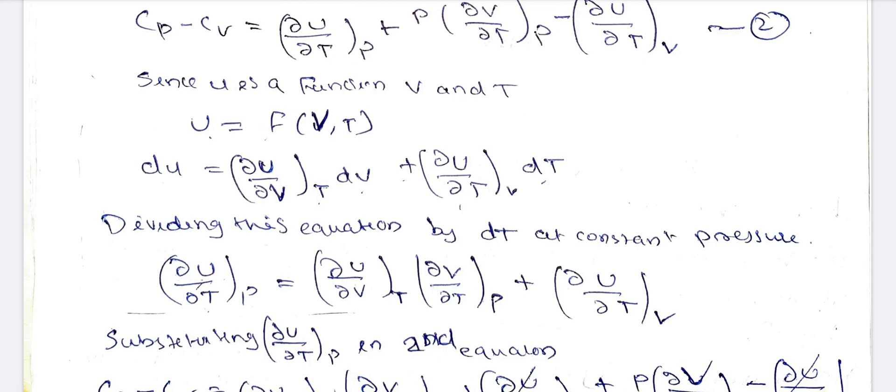We can write dU as: dU equals (∂U/∂V) at constant T times dV, plus (∂U/∂T) at constant V times dT. Dividing through, (∂U/∂T) at constant pressure equals (∂U/∂V) at constant T times (∂V/∂T) at constant P, plus (∂U/∂T) at constant V.